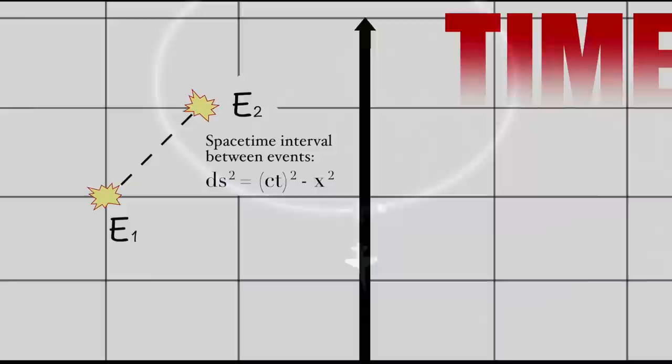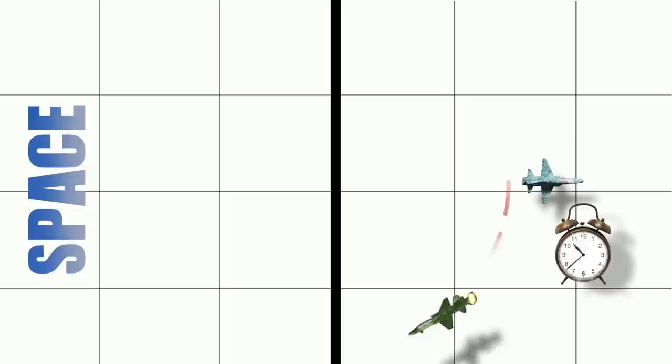Now, in empty, flat spacetime, this situation resembles the classic twin paradox scenario. One twin is at rest the entire time, so her clocks tick fastest, while the other twin travels away at a high velocity, so his clocks tick slower.